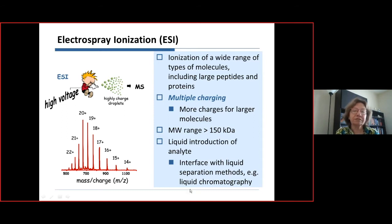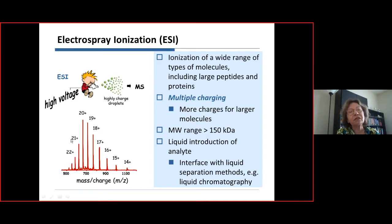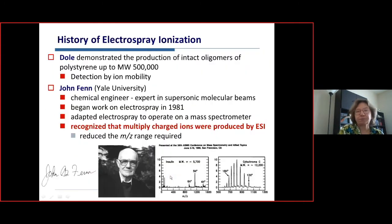An electrospray spectrum of myoglobin (~17,000 Da) shows a distribution of charge states, with up to ~24 charges loaded by protonation. Every adjacent peak differs by one proton. Electrospray interfaces beautifully with liquid separation methods and is a powerhouse for LC-MS.